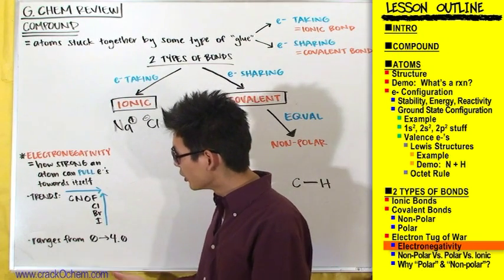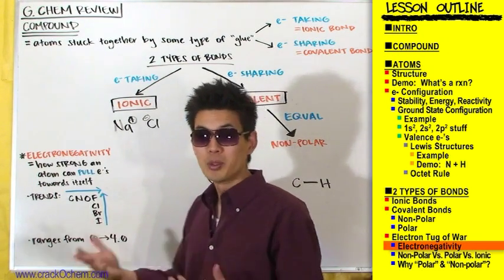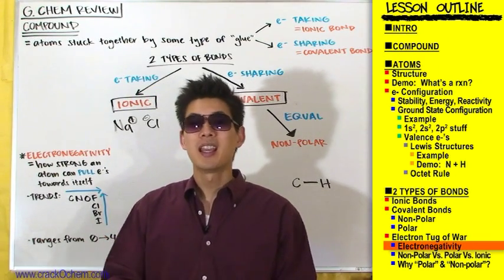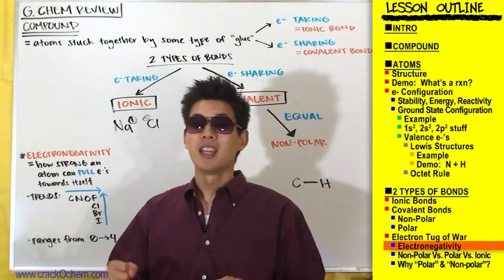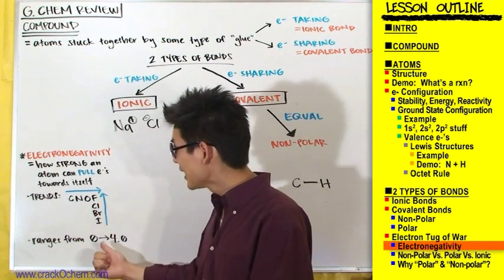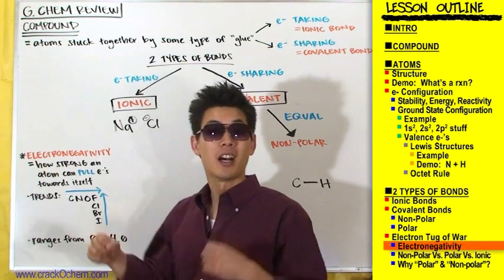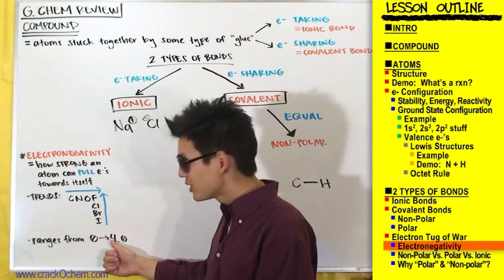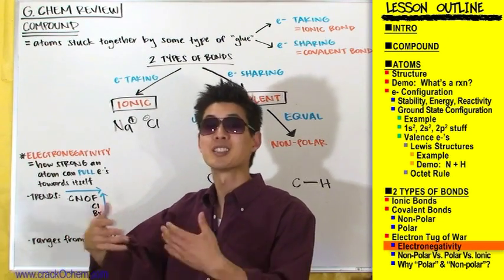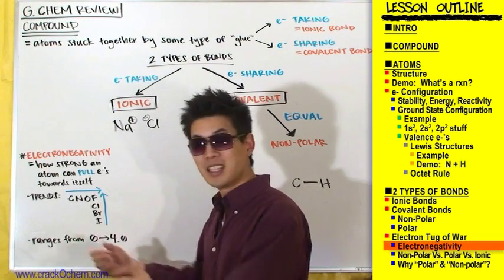Electronegativity ranges from zero to four. Think of it like going to the gym and asking someone how much they can bench — instead of saying 150 pounds, an atom says its electronegativity is 4, or 3.5, or 2. It's just a measure of how much that atom can pull electrons towards itself.